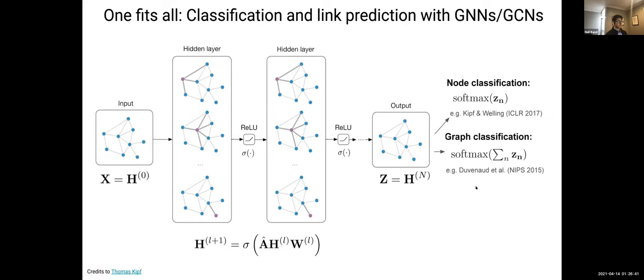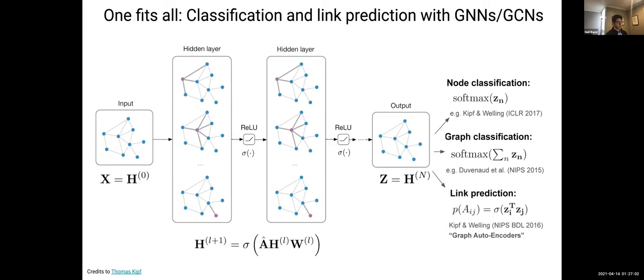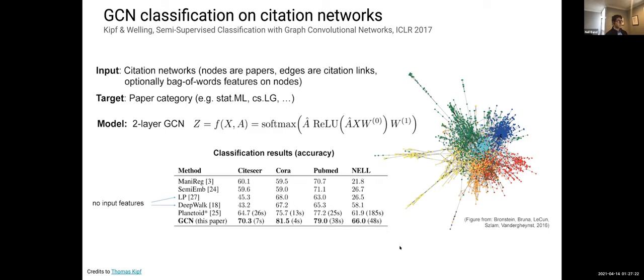Interestingly, you can take an autoencoder approach: look at embeddings for two nodes and use a scoring function to determine a probability of an edge between them existing. For example, take the dot product between them and apply a non-linearity — specifically a sigmoid — and interpret it as a squashed probability between zero and one of an edge existing between those two nodes.